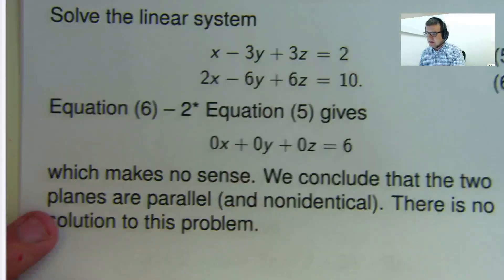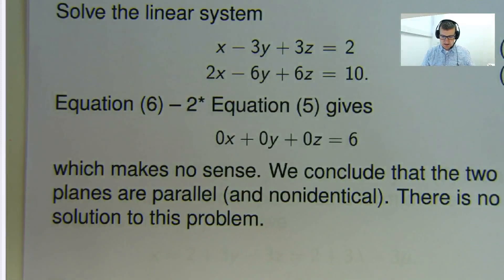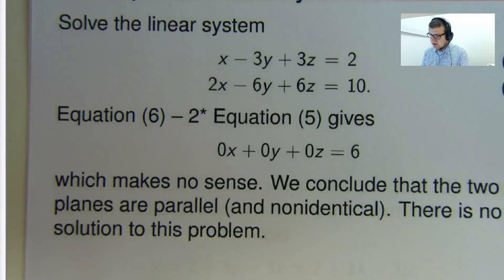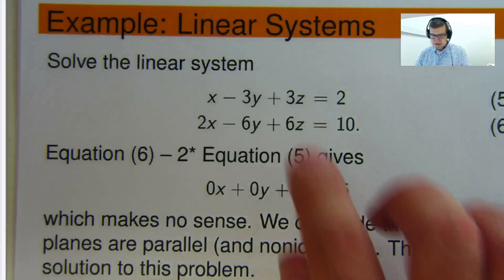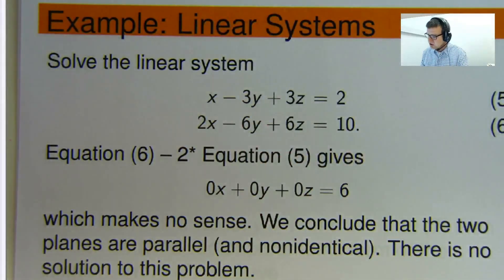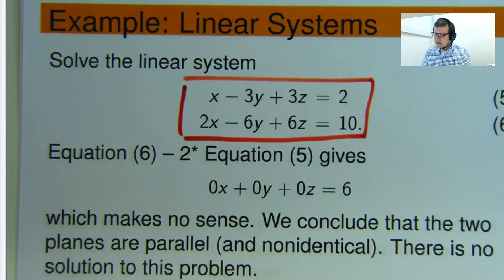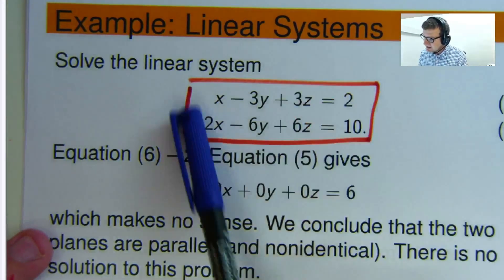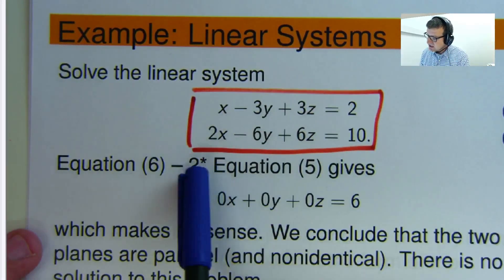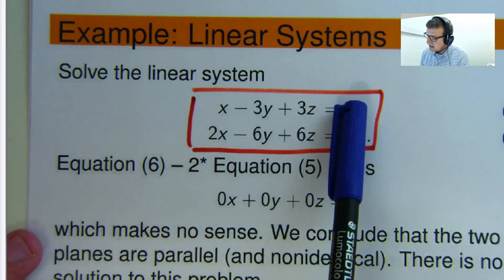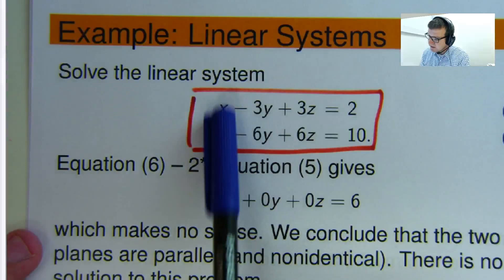So that was an example where the two planes touched along a line. Let me show you another linear system. Here we've got two equations, two unknowns, sorry, three unknowns, x, y, and z.